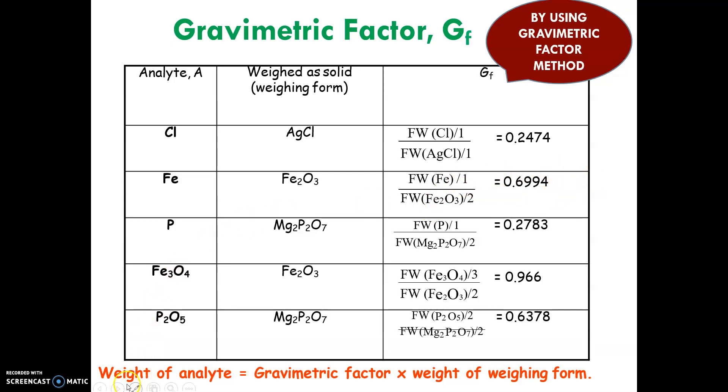To get the weight of the analyte, you calculate the gravimetric factor and then multiply it by the weight of the precipitate (the weigh form weight).